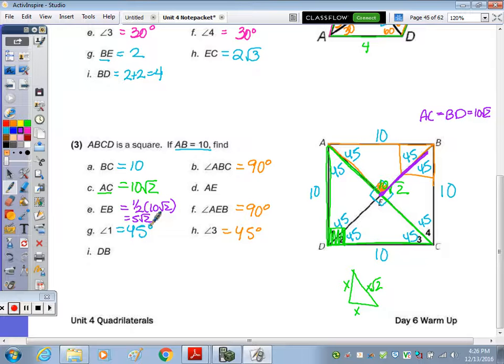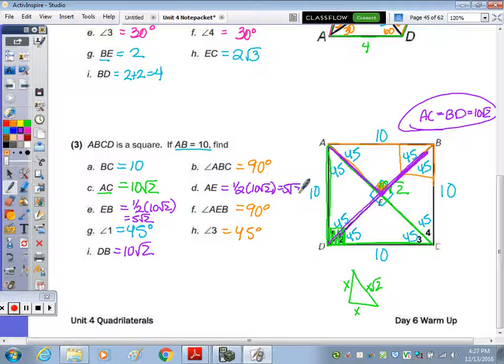DB, that's the whole, well, we just said that was the same as AC, diagonals are congruent, so that's 10 radical two. And then last, AE is half of 10 radical two, which equals 5 radical two.